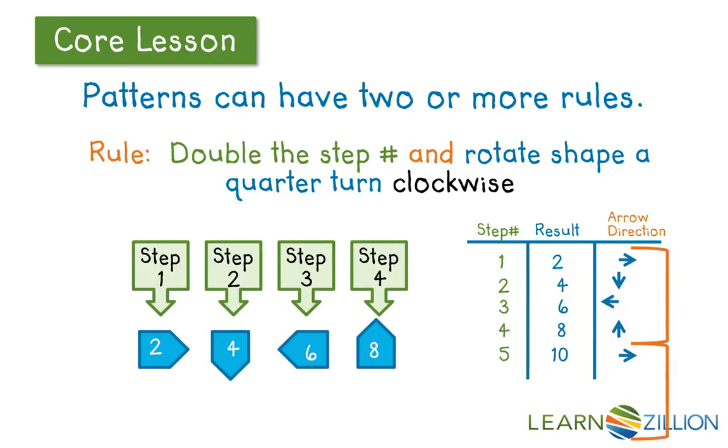This information can really help me because as I look at step number 6, I can say, what do I know about the other even numbers? I notice that step 2, the arrow goes down. Step 4, the arrow goes up. I can also notice my odd step numbers. The arrows go either left or right. So when I get to step 6, I can double the number, it's 12. And I know that my arrow will either go up or down.